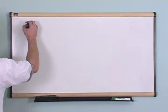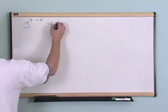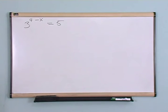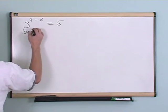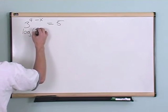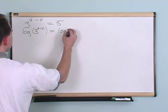What if you had an equation that looked like 3 to the power of 4 minus x equals 5. And I said solve for x. Again I can take the logarithm of both sides. So I'd have log of 3 to the 4 minus x equals log of 5.